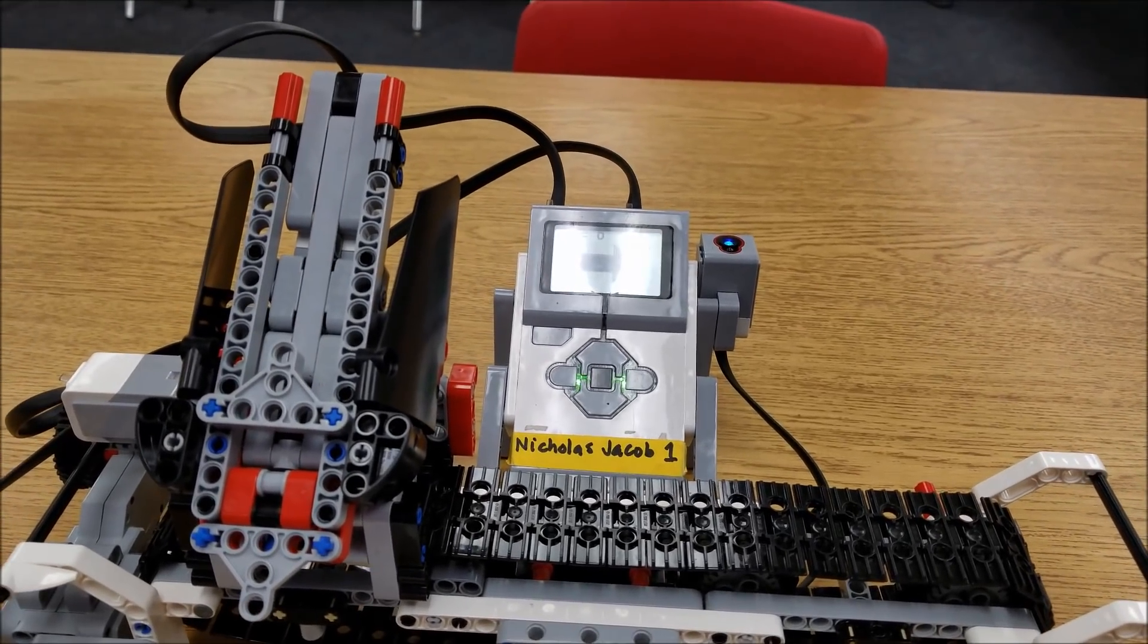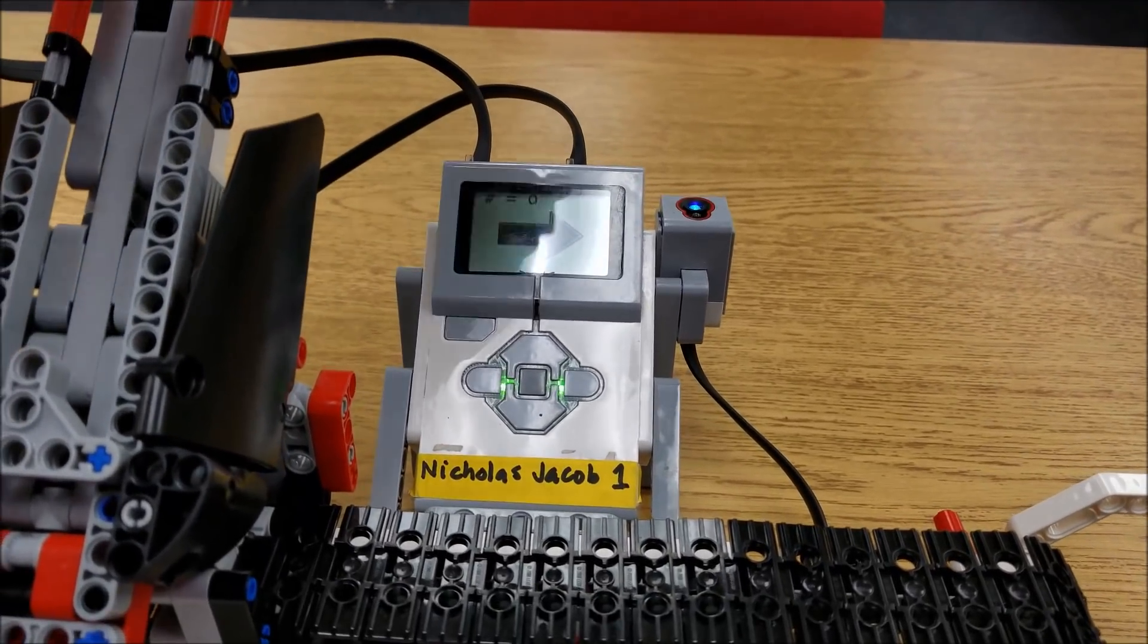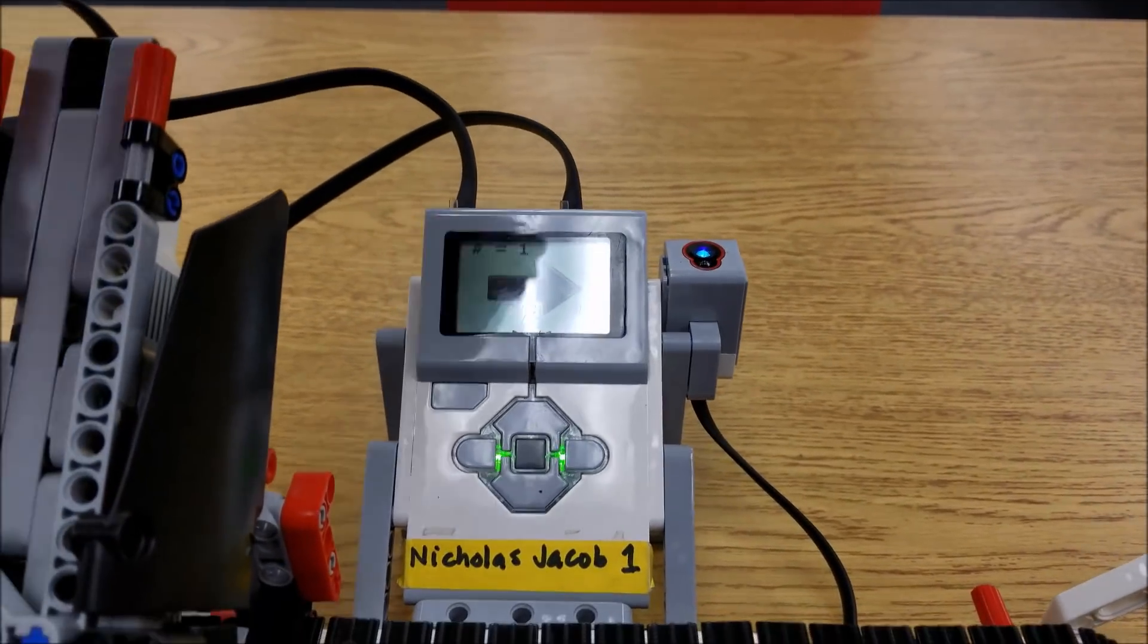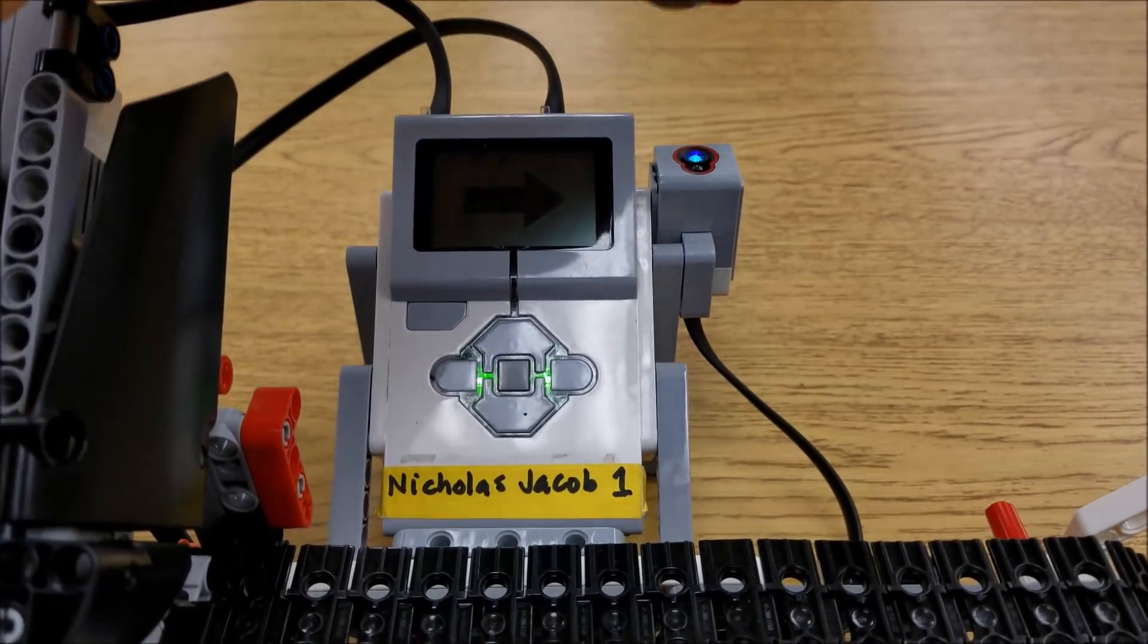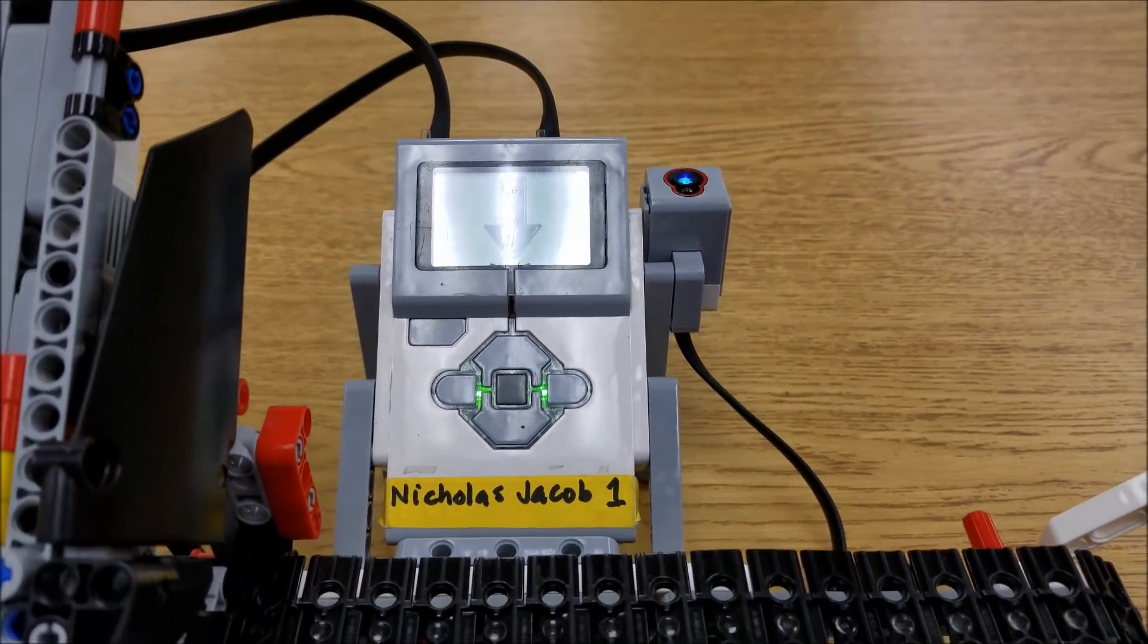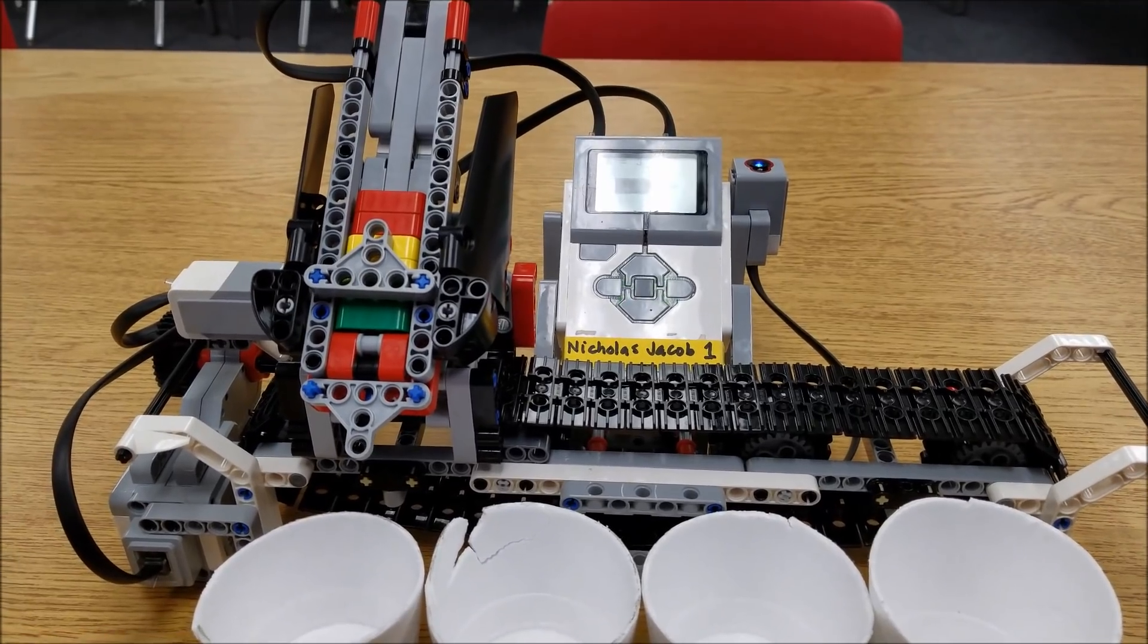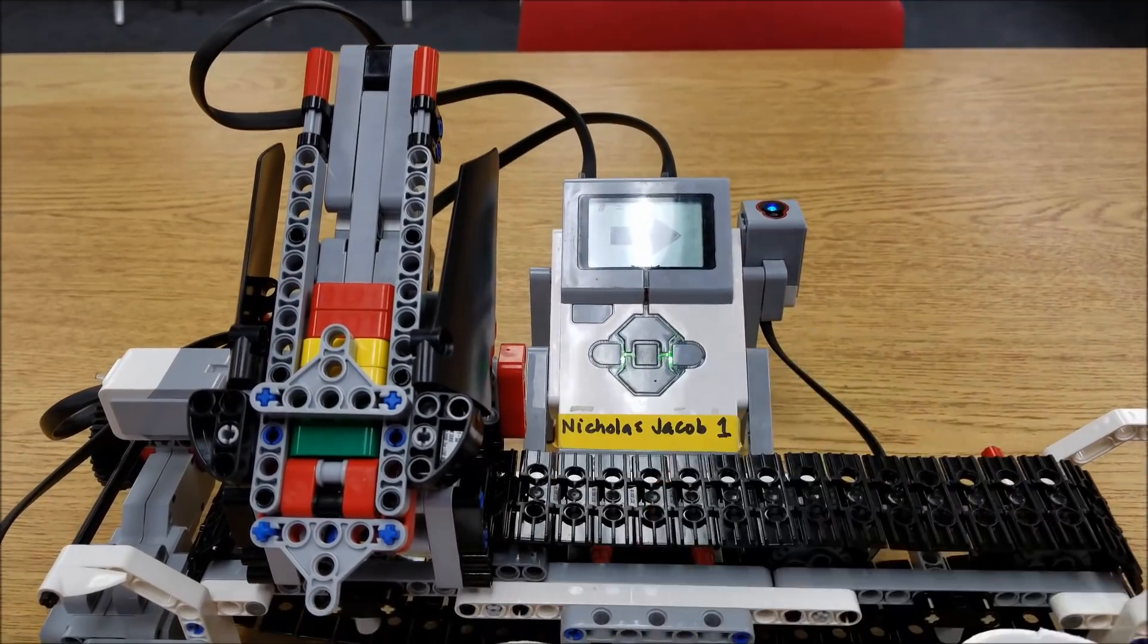But yeah, my students always have fun with this. They always think they're at the grocery store scanning things in. So we're going to go with green, yellow, and red. I'm going to skip blue for right now. I don't know if this particular sorter is colorblind, but it's thinking that blue is green. But we'll just see it sort these pieces out.